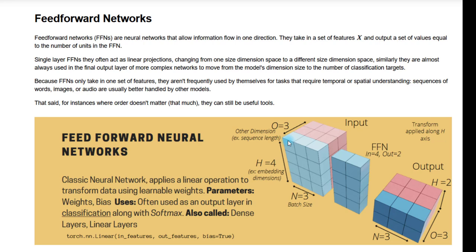The same transformation would be happening across all of this O dimension, but it would be an independent transformation each time. You can think of one step in this training process as this blue set of blocks. So your 4x3 block on the very outside of this input would get transformed by our feedforward network to create this 2x3 block in our output. We get 2x3 simply because our feedforward network takes a number of inputs and gives a number of outputs, with the input corresponding to the H dimension — so it has to be 4 in order for these to match up.